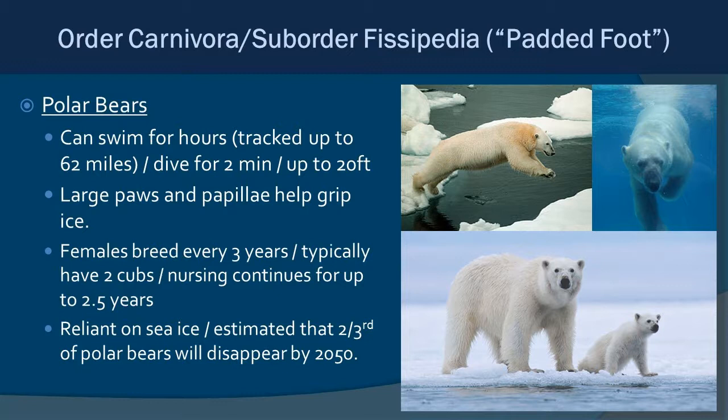Females breed about every three years and typically have up to two cubs, sometimes three. Nursing continues for about two and a half years, at which point the female is ready to breed again. A male will come along, and the cub is generally chased off — either by the female herself or her pursuing males — and at that point the cub is on its own.